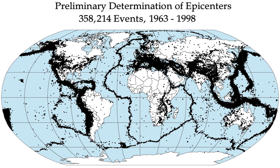While forecasting is usually considered to be a type of prediction, earthquake forecasting is often differentiated from earthquake prediction. Earthquake forecasting is concerned with the probabilistic assessment of general earthquake hazard, including the frequency and magnitude of damaging earthquakes in a given area over years or decades. For well-understood faults, the probability that a segment may rupture during the next few decades can be estimated. Earthquake warning systems have been developed that can provide regional notification of an earthquake in progress, potentially allowing people to seek shelter before the earthquake's impact is felt.